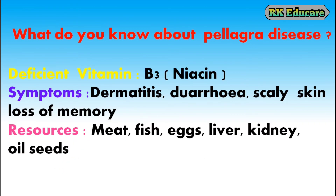What do you know about Pellagra disease? Pellagra disease is due to deficiency of vitamin B3, also called niacin. Symptoms include dermatitis, diarrhea, scaly skin and loss of memory. Meat, fish, eggs, liver, kidney and oilseeds are the resources of vitamin B3 or niacin.